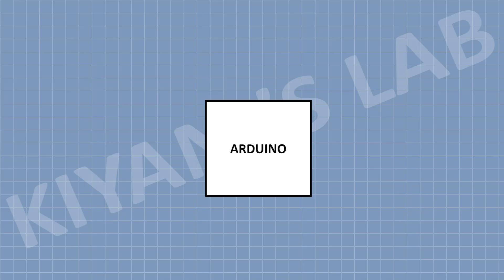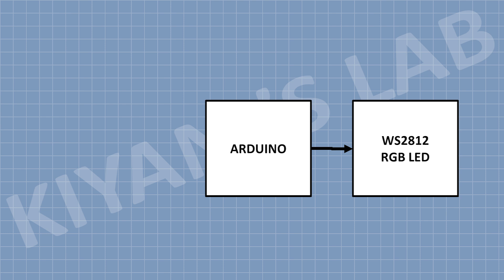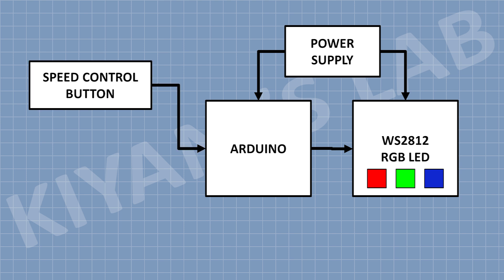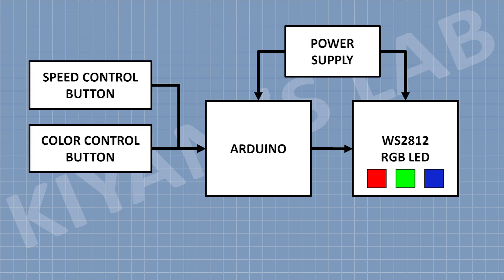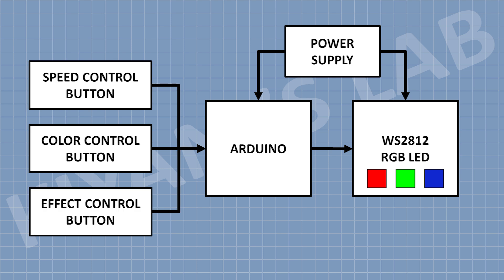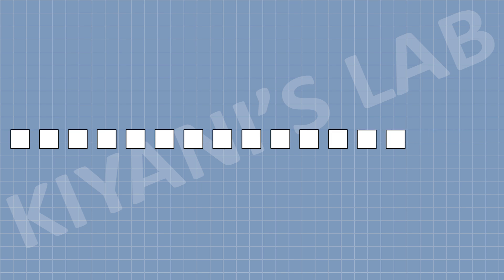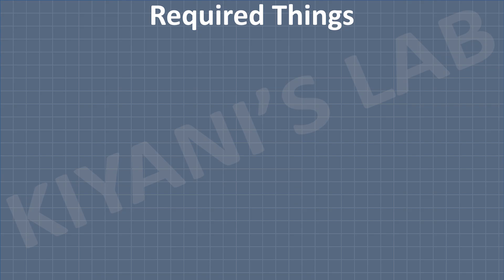We are going to use Arduino to control a WS2812 LED strip light. I am using Arduino Uno, but you can use Arduino Nano, Arduino Pro Mini, or any other Arduino. We are also going to use three buttons: one for speed control, one for changing the color, and one for changing the effect. We also need to set the number of LEDs we are going to use with this controller. These are all the components we are going to need for this project.